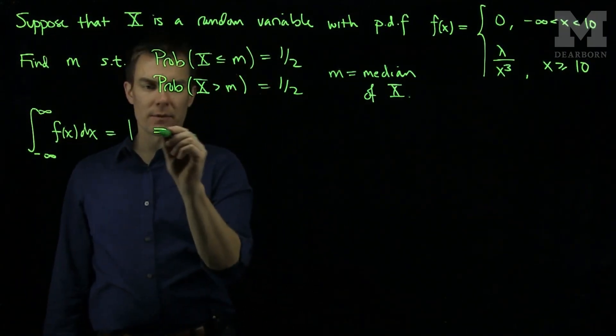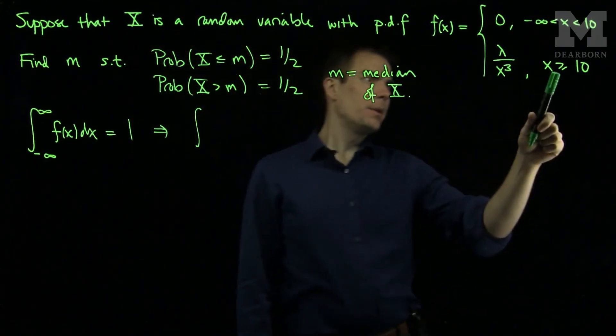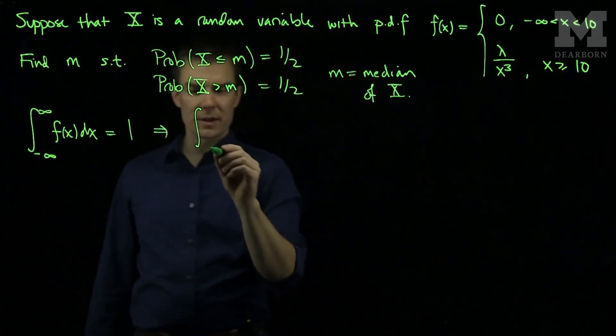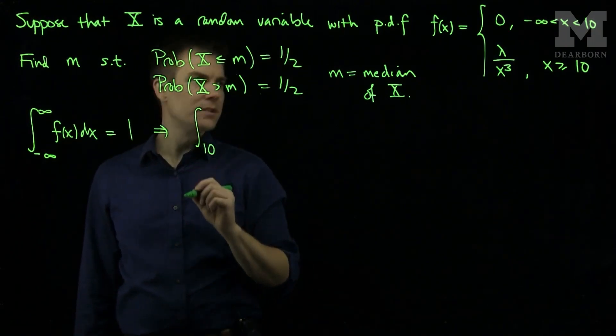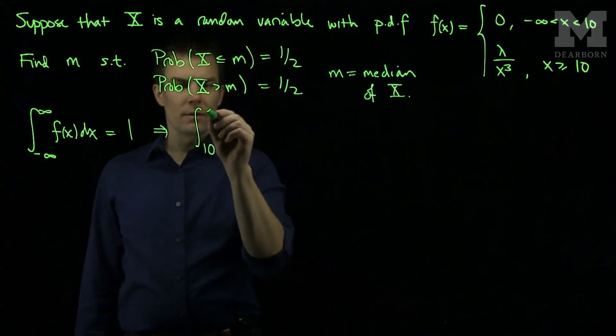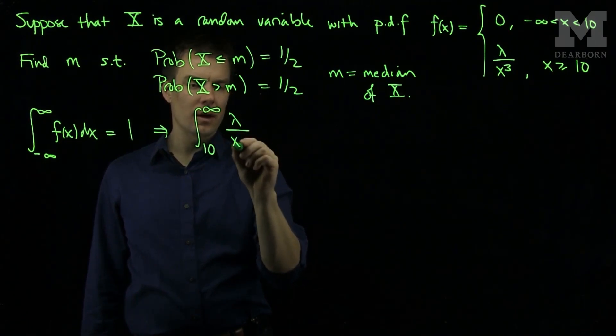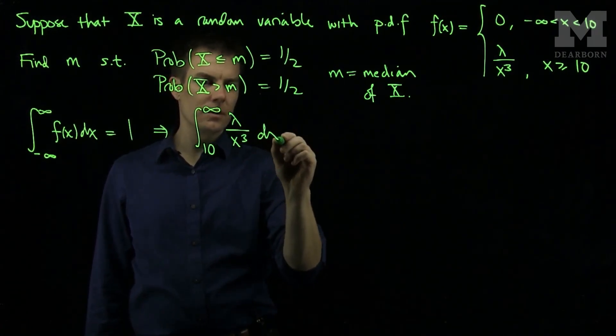This tells me that the integral, the pdf only cares for values of x which are larger than 10. So I will have 10 to infinity of lambda over x cubed dx.